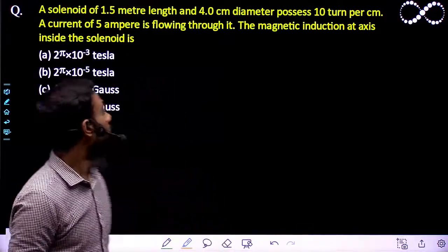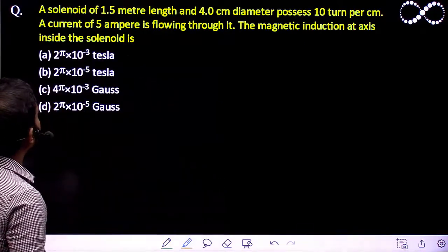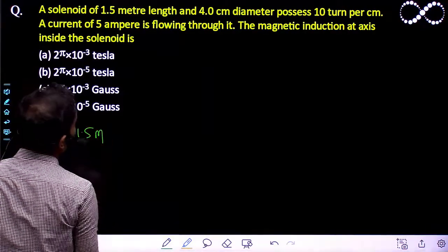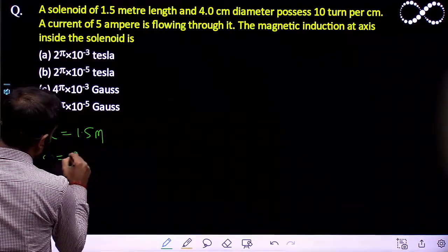Hello students, let us see this question here. A solenoid of length - the length of solenoid is given 1.5 meter, the diameter is given 4 centimeter.